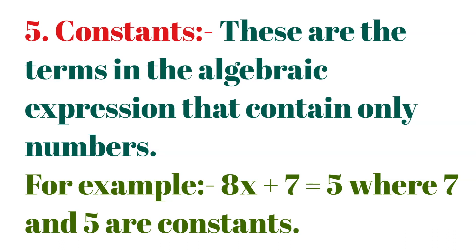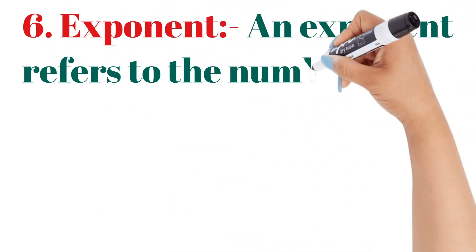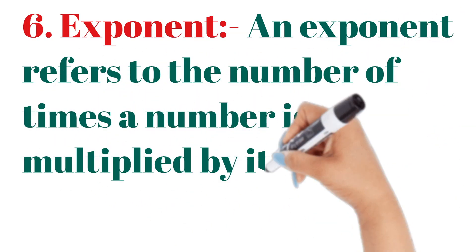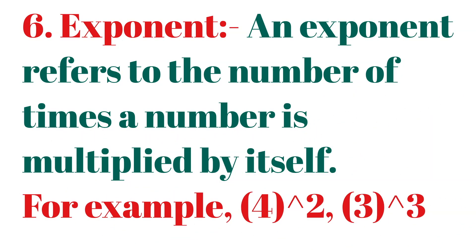As you can see in this equation, 7 and 5 are constants. Exponent: an exponent refers to the number of times a number is multiplied by itself. For example, 4 raised to power 2, or 3 raised to power 3 — the superscript number is the exponent.